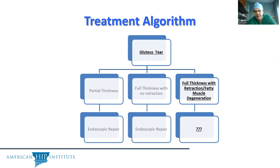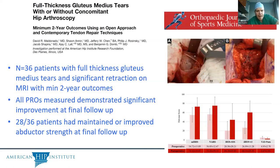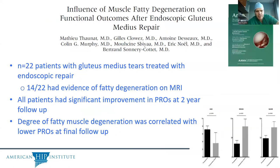Escalating up in damage, a full thickness tear with retraction or fatty muscle degeneration — one of the things seen on MRI — requires different management. These patients are often treated open. If you have a retracted tendon, it is hard to visualize and repair endoscopically. Outcomes with open repair for these patients were comparable to the endoscopic results previously discussed, and patients can achieve durable results comparing endoscopic and open treatment. If you do have fatty degeneration at the time of surgery, it is a negative prognostic indicator for success.